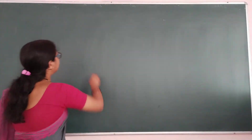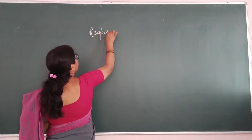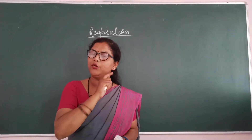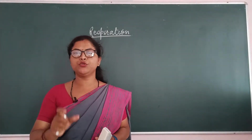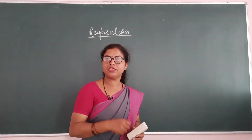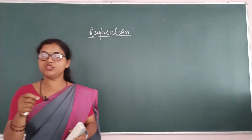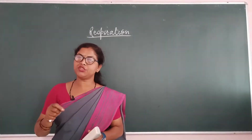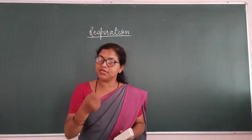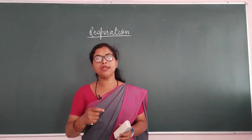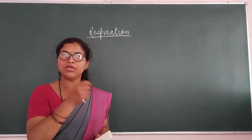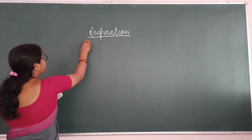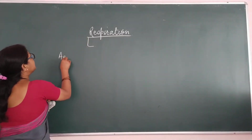Let's start the topic of respiration. If you wish to see all my videos from class 7 to 10, please subscribe to this channel and go to the playlist where chapter-wise videos are given. What do we mean by respiration? It means obtaining energy and eliminating toxic substances in the form of CO2. During respiration, we obtain energy by the oxidation of food in the presence of oxygen and elimination of CO2 through the lungs. This process is known as respiration.